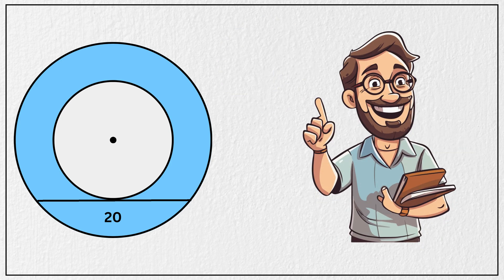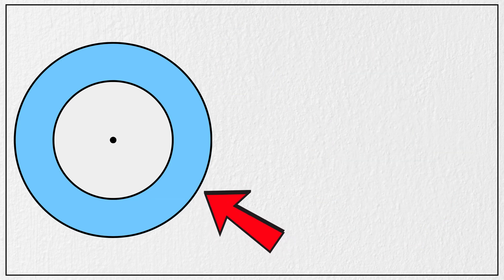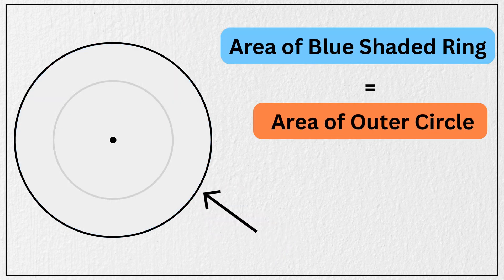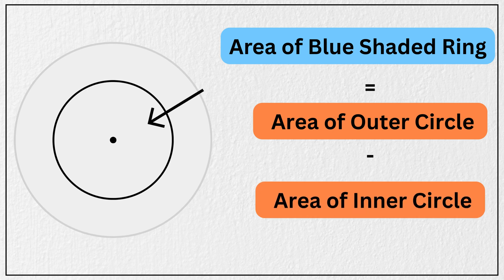Alright, let's solve it together. Since these two circles are concentric, it's clear that the area of the blue shaded ring is just the area of the outer circle minus the area of the inner circle, right?